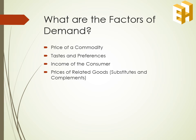First, substitute goods. These are the goods which are consumed in place of one another, like a black pen or blue pen. If the price of a substitute good increases, the demand of the commodity increases. Thus, demand has a positive relationship with the price of a substitute good. Second, complementary goods are consumed together, like car and petrol. If the price of a complementary good increases, demand for a commodity decreases — there is a negative relationship between demand and price of a complementary good.